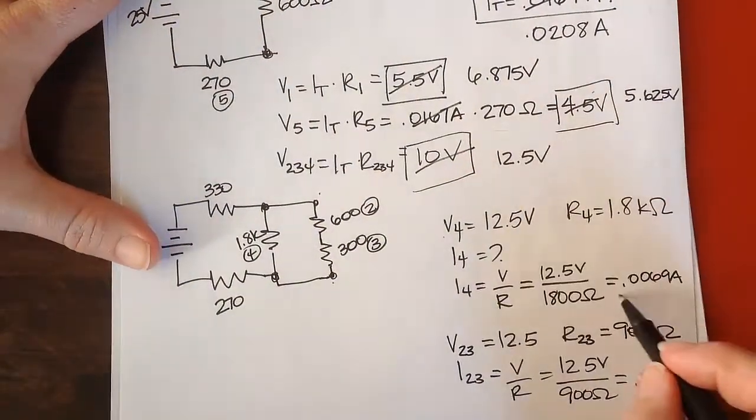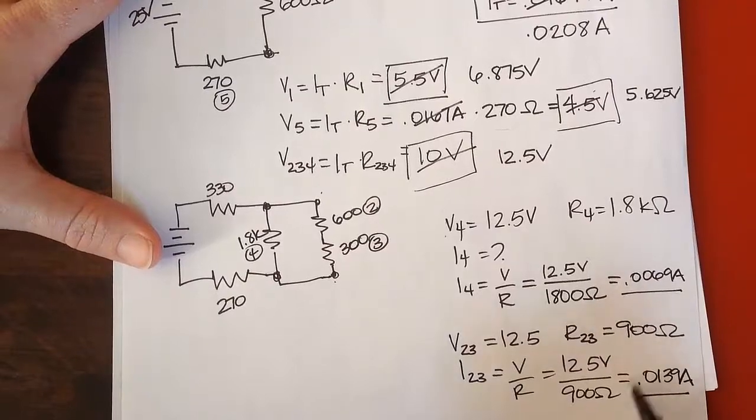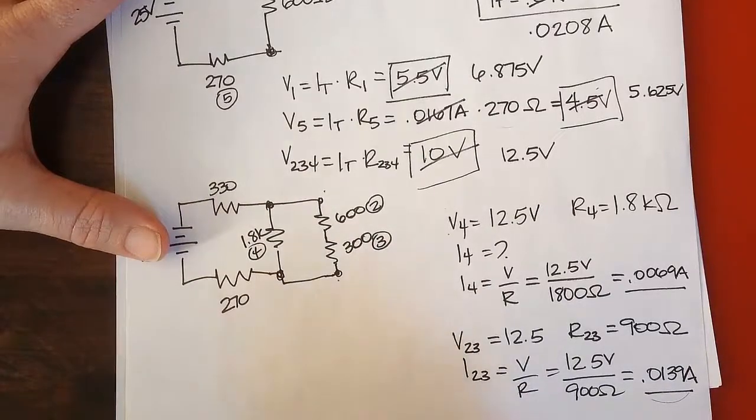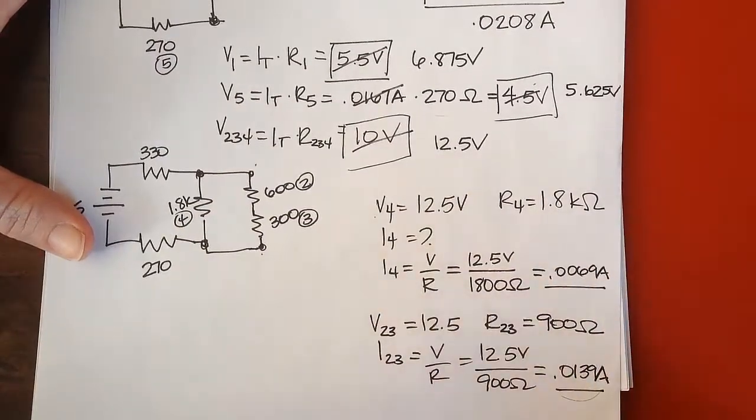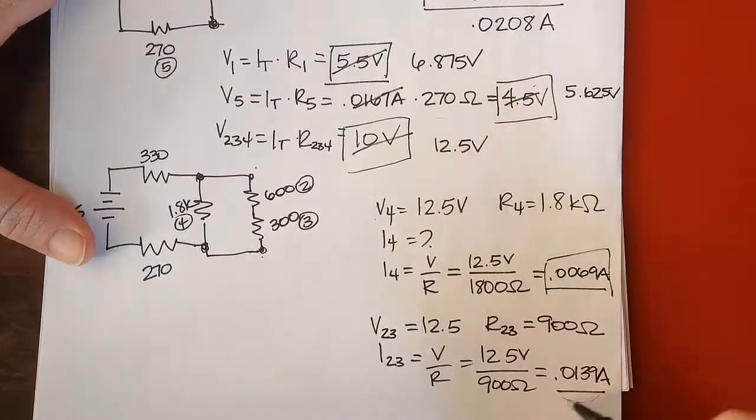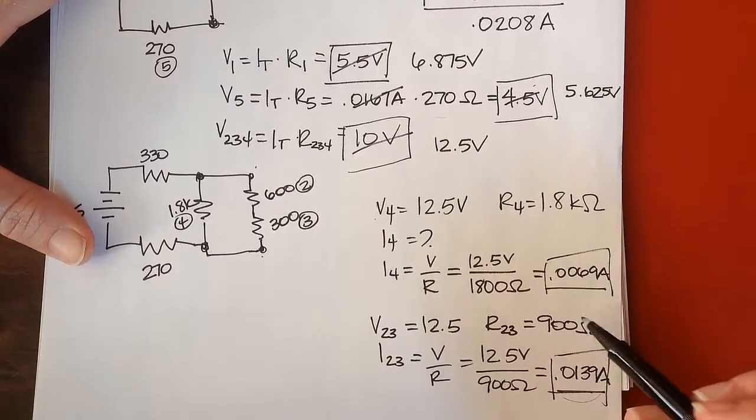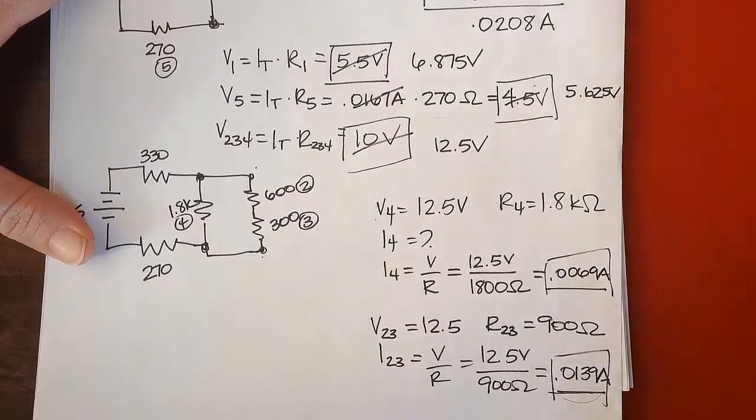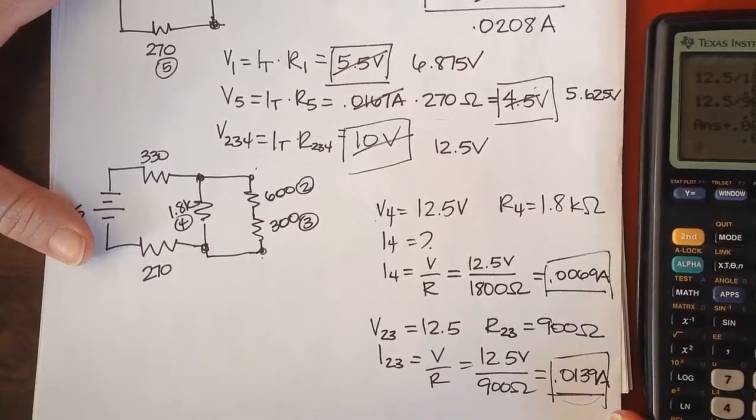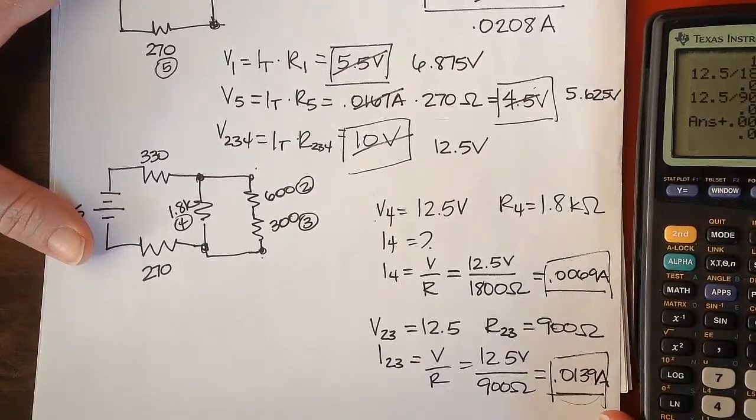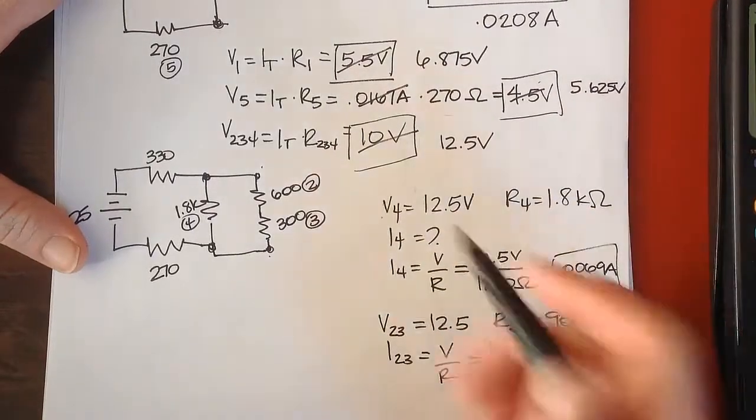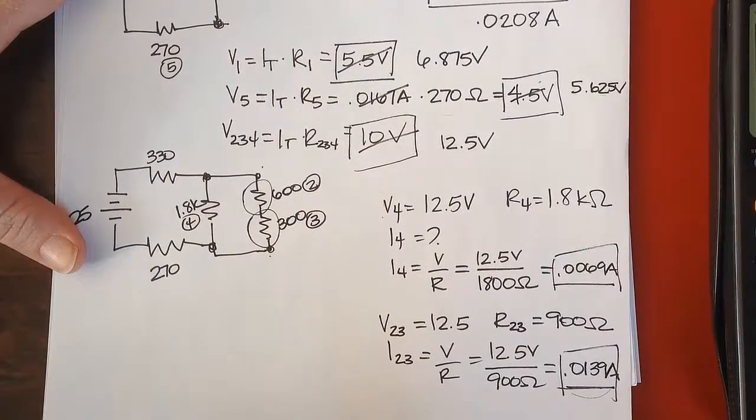A couple of things to look at here. One, we expect that that current would be greater because there's less resistance in that branch. Two, I'm sorry, I realize you can't see that current. We expect that current to be greater because there's less resistance here. Two, this current plus this current better add up to be about the total current. So if we add those up, we get, yep, 0.0208 amps. So that's correct.